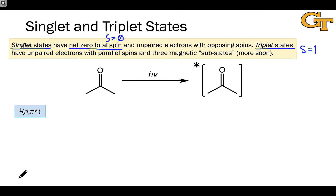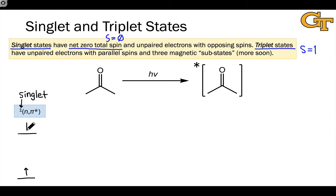We depict them differently by showing the spins in each of the relevant occupied orbitals. For example, in the singlet nπ* state — the superscript one to the left of the electron configuration indicates spin multiplicity, and a one there refers to the singlet state — anti-parallel spins can be drawn with the n orbital lower in energy and the π* orbital higher, or with both spins flipped. Those are equivalently the singlet state, and there is really only one singlet state.